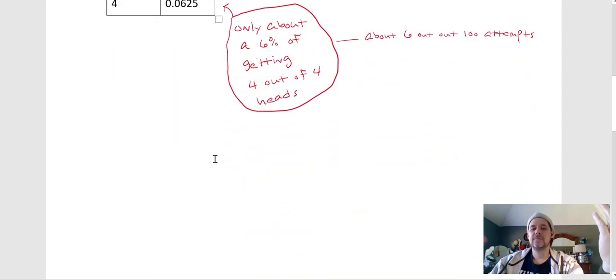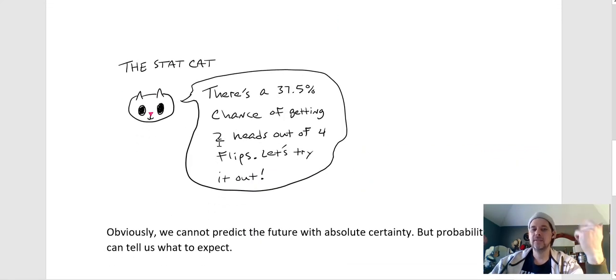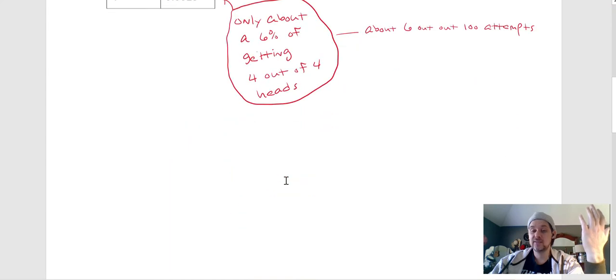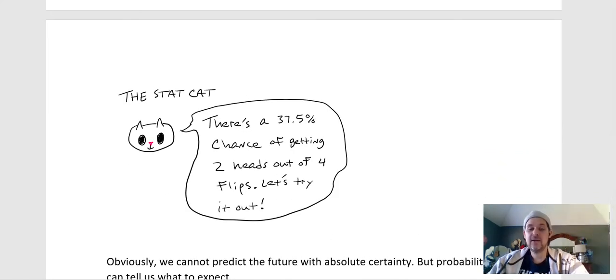We said that the probability of getting two heads was the most likely event. That number was 0.375. It highlights the part of the graph that represents that probability. That's how I got those numbers - I used StatCrunch to do all the computations. Now the stat cat says there's a 37.5 percent chance of getting two heads out of four flips. Let's try it. I mean, 37.5 percent, that's like a little bit more than a one out of three chance.